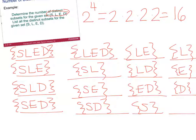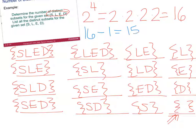The last one is the one people forget about — you can include none of the elements, which gives you the empty set. Most people forget to include the empty set. So we've come up with all 16 different combinations of letters — all possible subsets. Now if they asked for all proper subsets, you'd decrease it by one, giving 15 proper subsets. That very first subset with all four elements would not be allowed, because it equals the set itself. Let me know if you have any questions. Thank you.